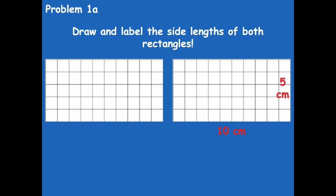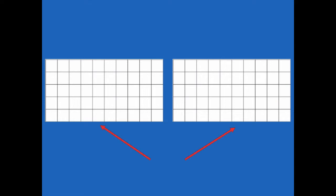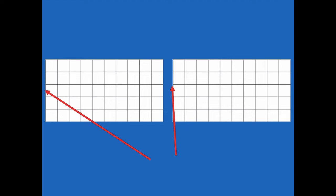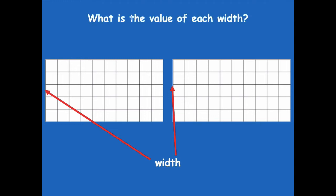Here we have 10 centimeters and 5 centimeters. Both of these rectangles are the same, so both have side lengths of 5 and 10. These two sides of a rectangle are called the length — the value of each length is 10 centimeters. On the sides, this is our width. To find the area — remember, we've talked about this — it's length times width, so you're multiplying those two sides together. The value of each width of our rectangles is 5 centimeters.